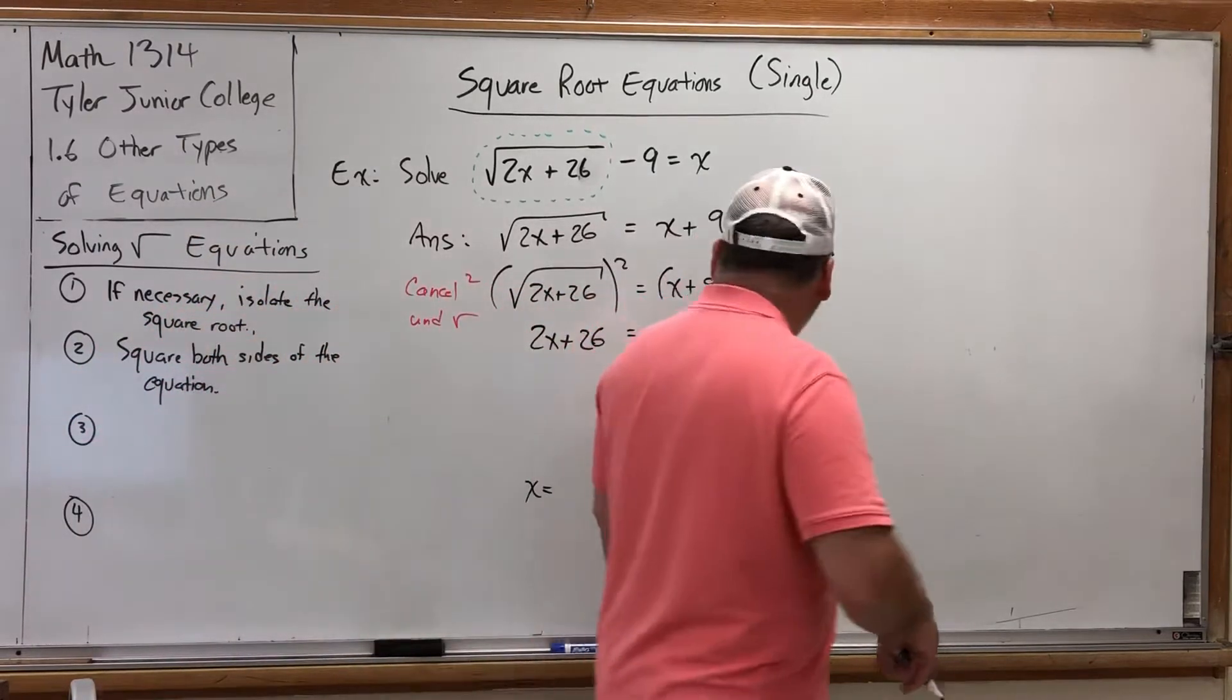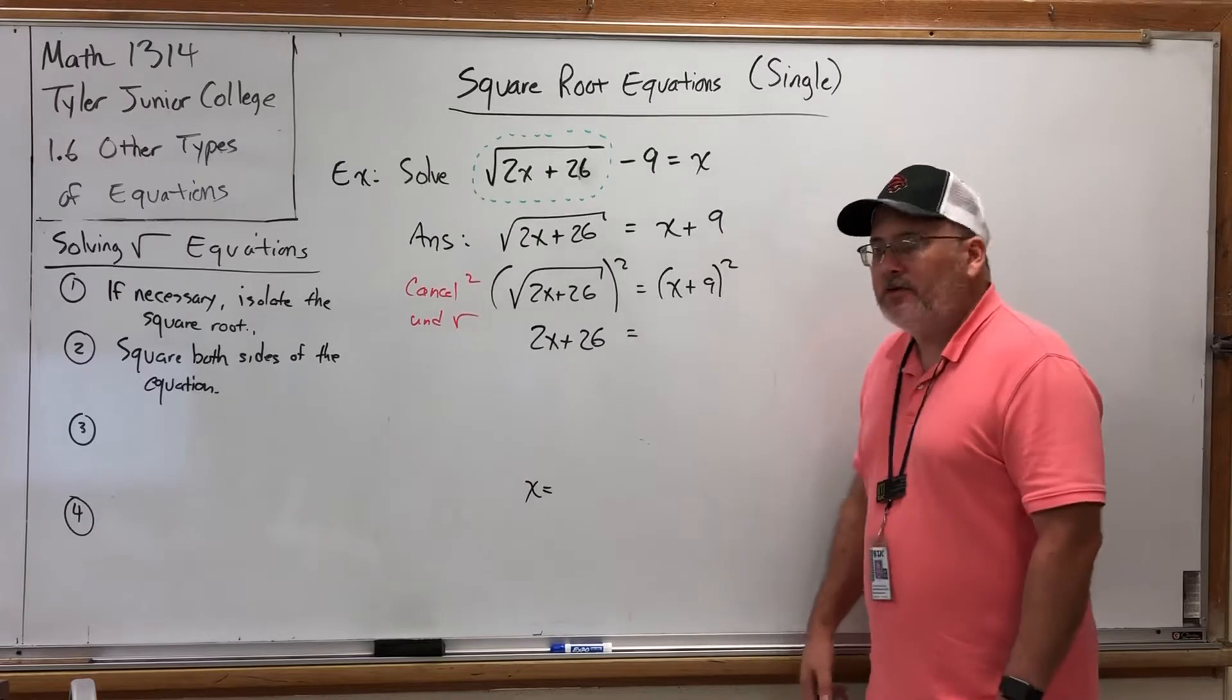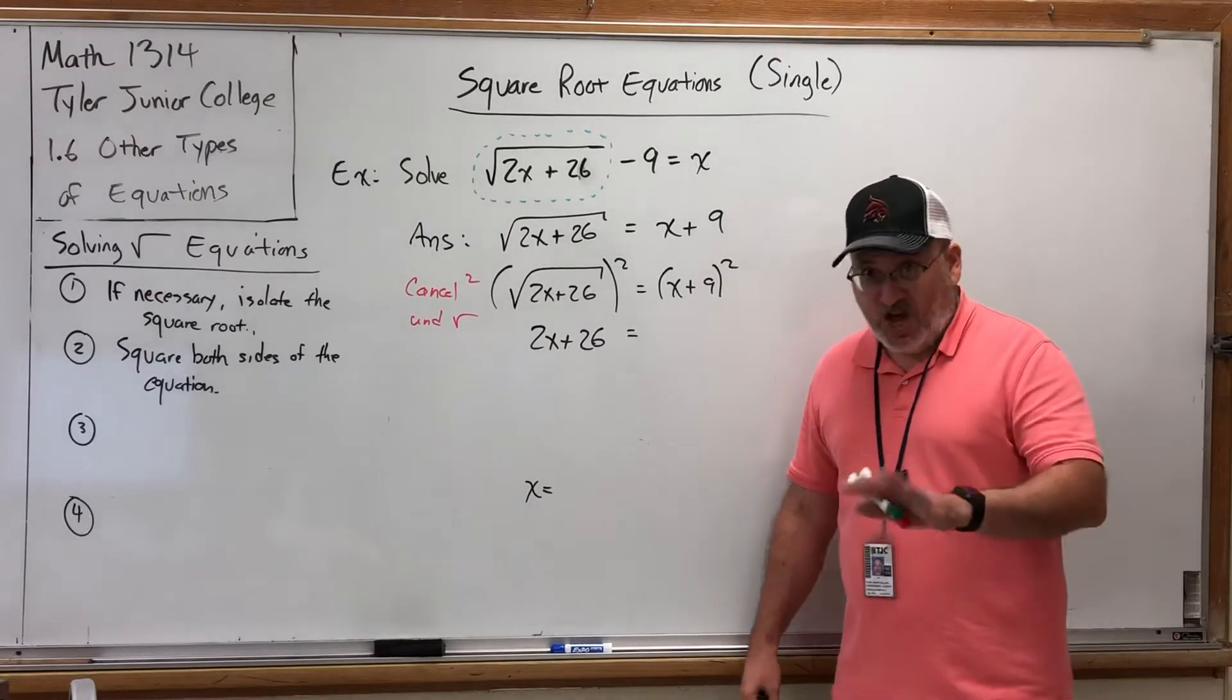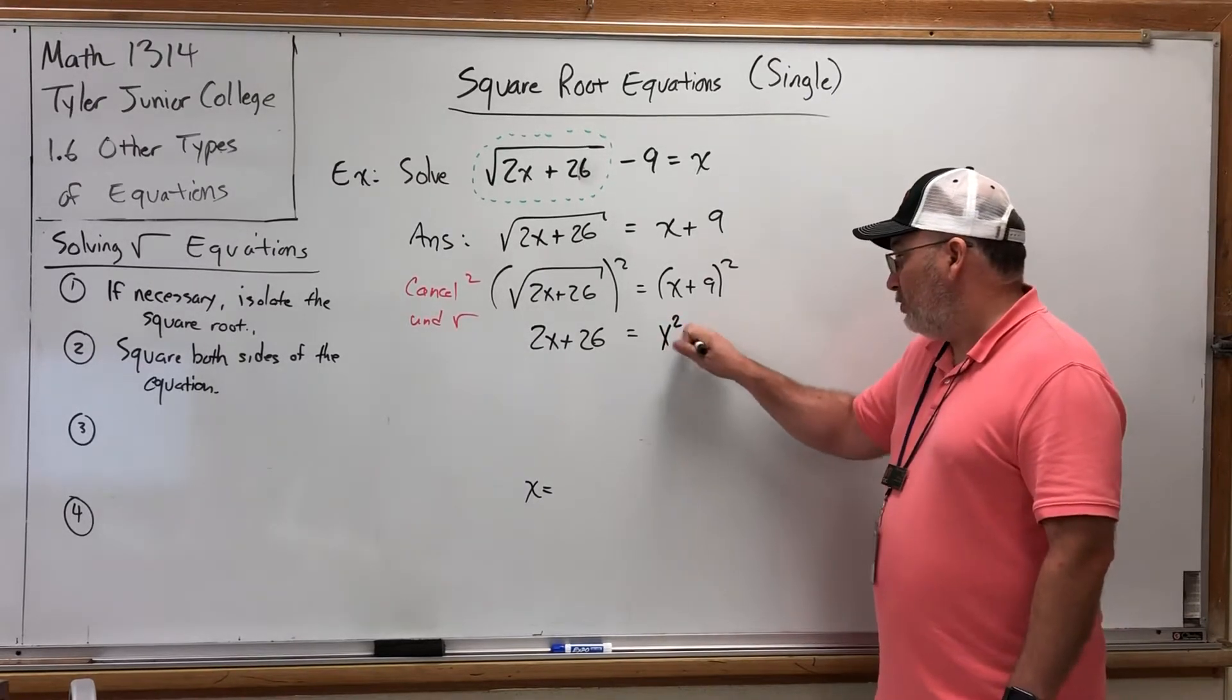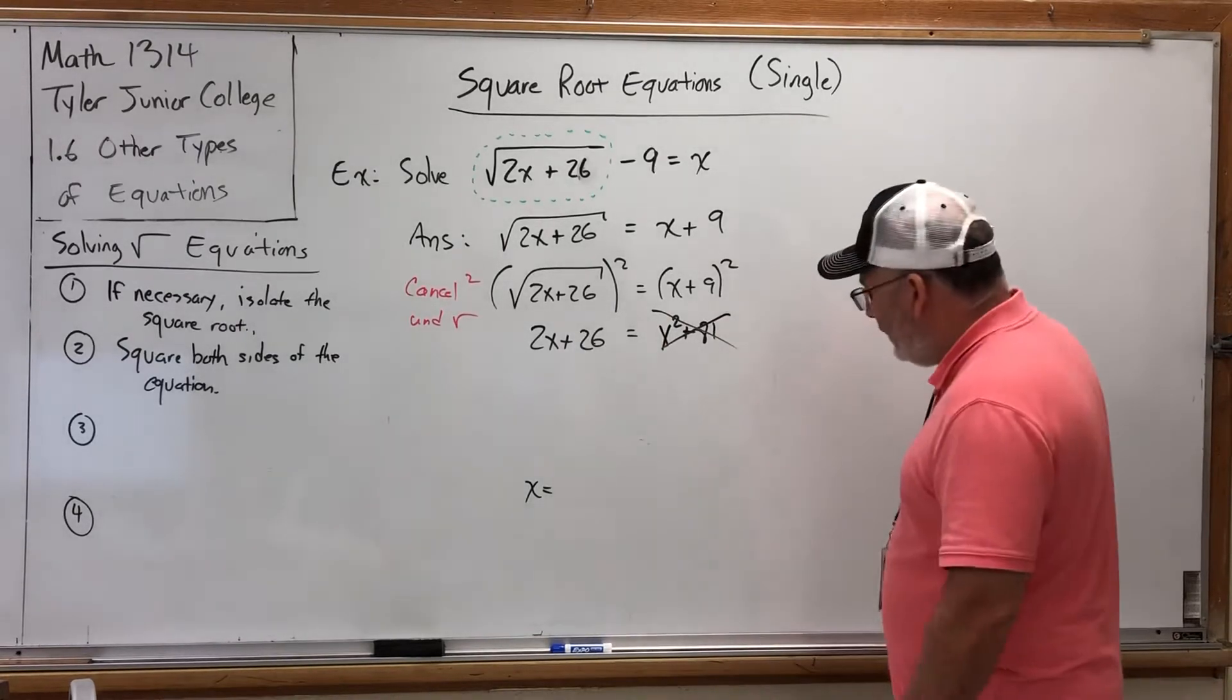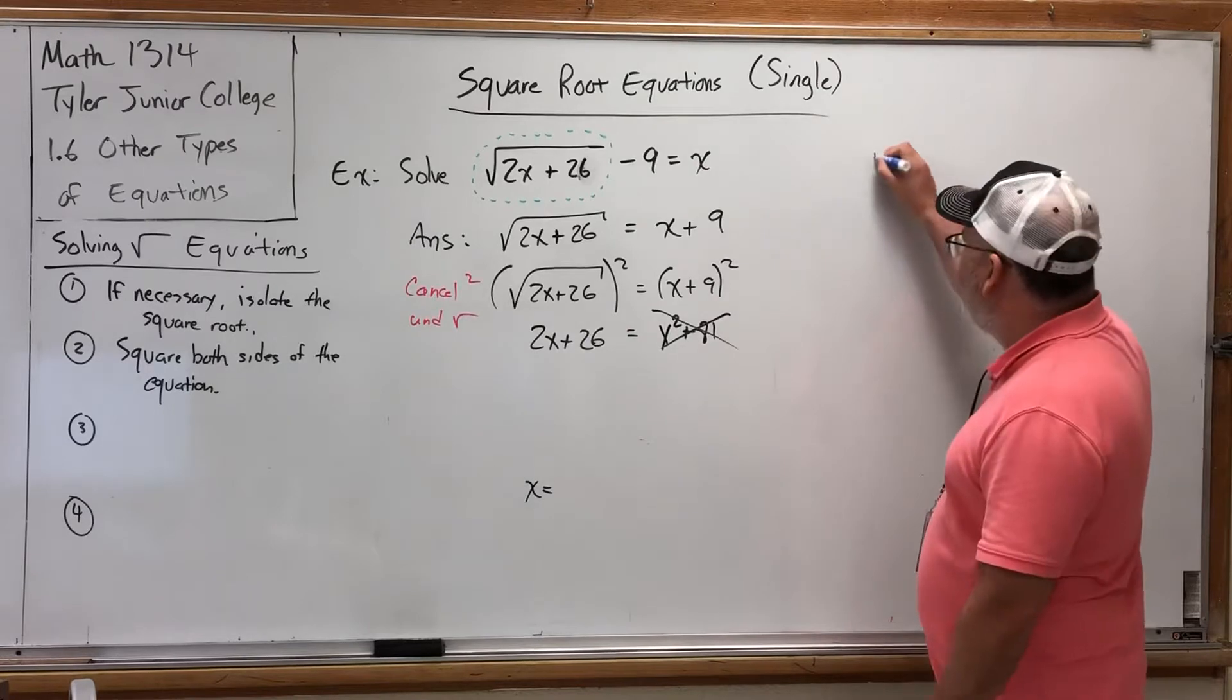What about x plus 9 in parentheses squared? How should we do that? If you're thinking square the x and square the 9, stop. This is not equal to x squared plus 81. Why? In a previous video, I kind of gave you a hint on how to remember when you can and cannot distribute.